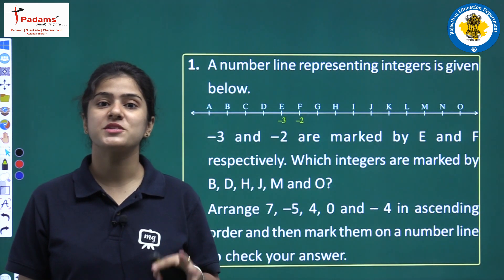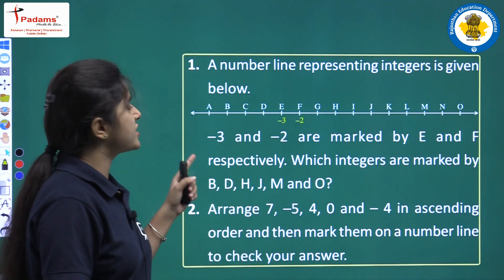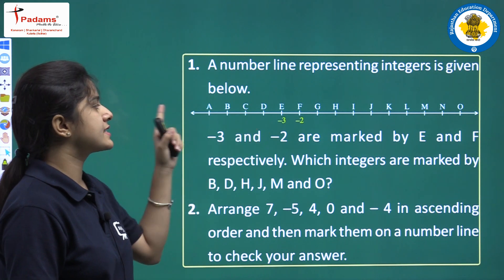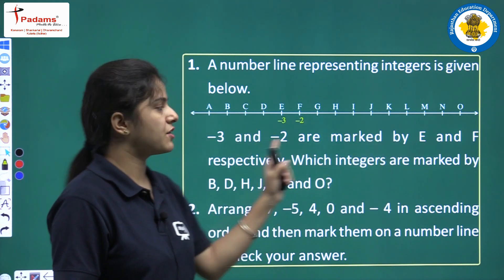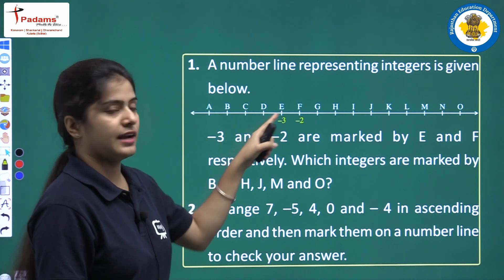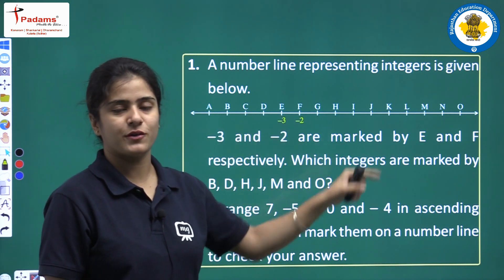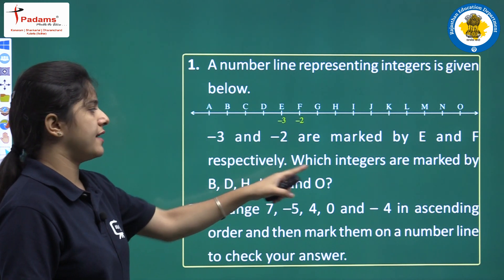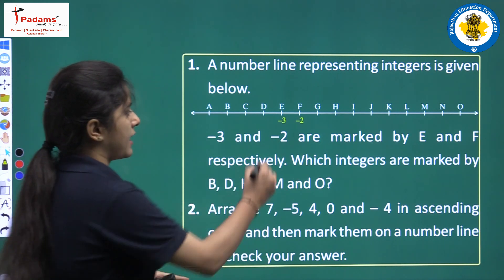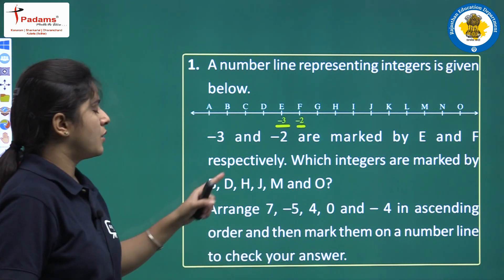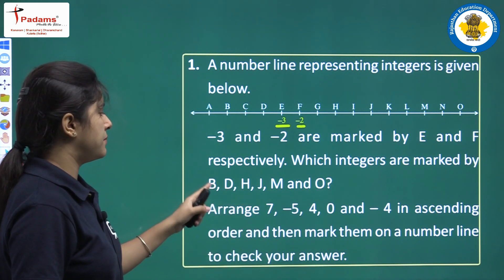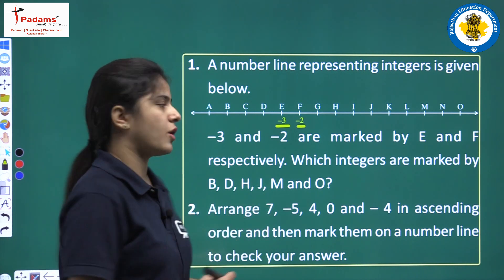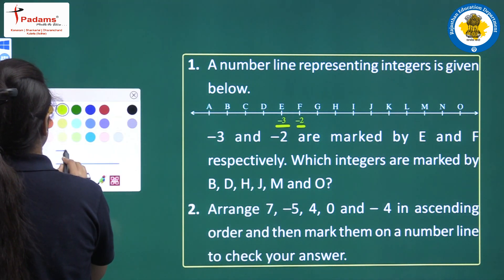We will discuss a question. Question number 1: a number line representing integers is given, and different points are marked as a, b, c, d, e, f and so on. Minus 3 and minus 2 are marked by e and f respectively. Which integers are marked by b, d, h, j, m and o? You have to find out which integers are marked by these letters.